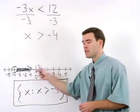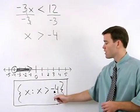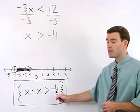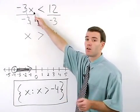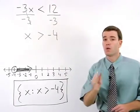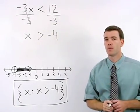All this means is that if we take any number greater than negative 4 and plug it back in for x in our original problem, we'll get a true statement. Try one.